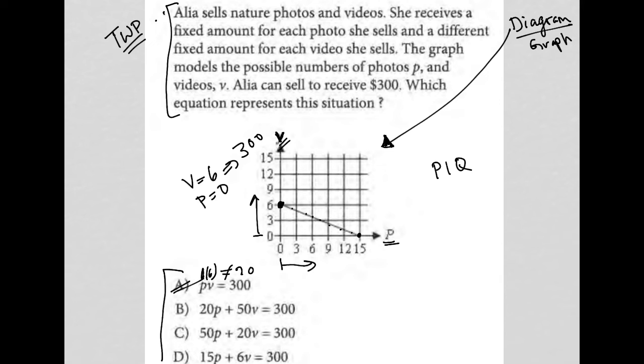Choice B, if 20 times 0, that's 0, and 50 times 6, 50 times 6, that is equal to 300. So I like that at least it does work.